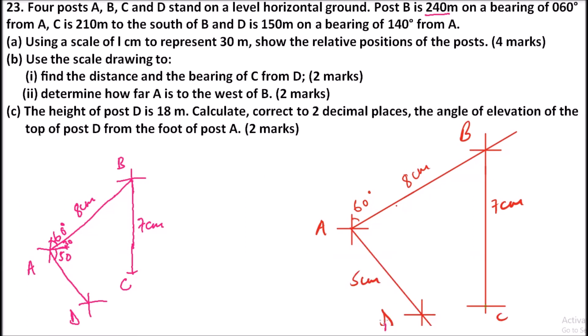Here it is a five centimeter representing 150. What I have done is that since this angle here is 30, those two add up to 90. Then I have added an angle of 50 so that the total of this angle is 140, which is a bearing of D from A.